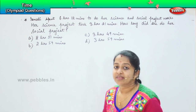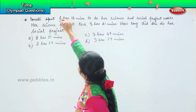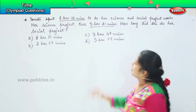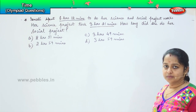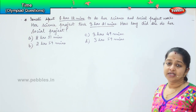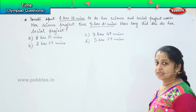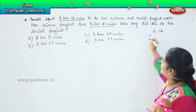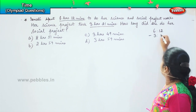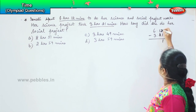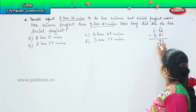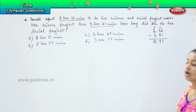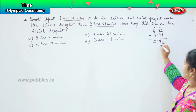So it is a very simple question. They have given the total hours which Sonali spent to do both her science and SST project, and they have given us the time she took for completing the science project. So now we need the balance amount she has taken to complete her SST project. It is a simple subtraction: six hours and twelve minutes minus three hours and twenty-one minutes.